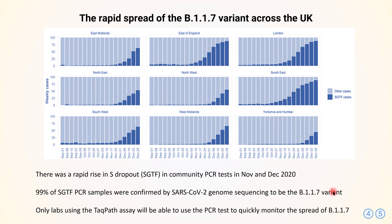The labs which use the TaqPath assay can use the PCR test to quickly monitor the spread of variant B.1.1.7, and that's what's happening in the UK. Other countries could do this as well if they use this particular assay. If they use a different assay, they won't get this result. Also, S gene target failure is not necessarily due to this variant because there are some other variants — Denmark in particular had a different variant with that same deletion 69-70 — so they might not be able to use this assay quite so easily to monitor the spread of this new fast-spreading variant.